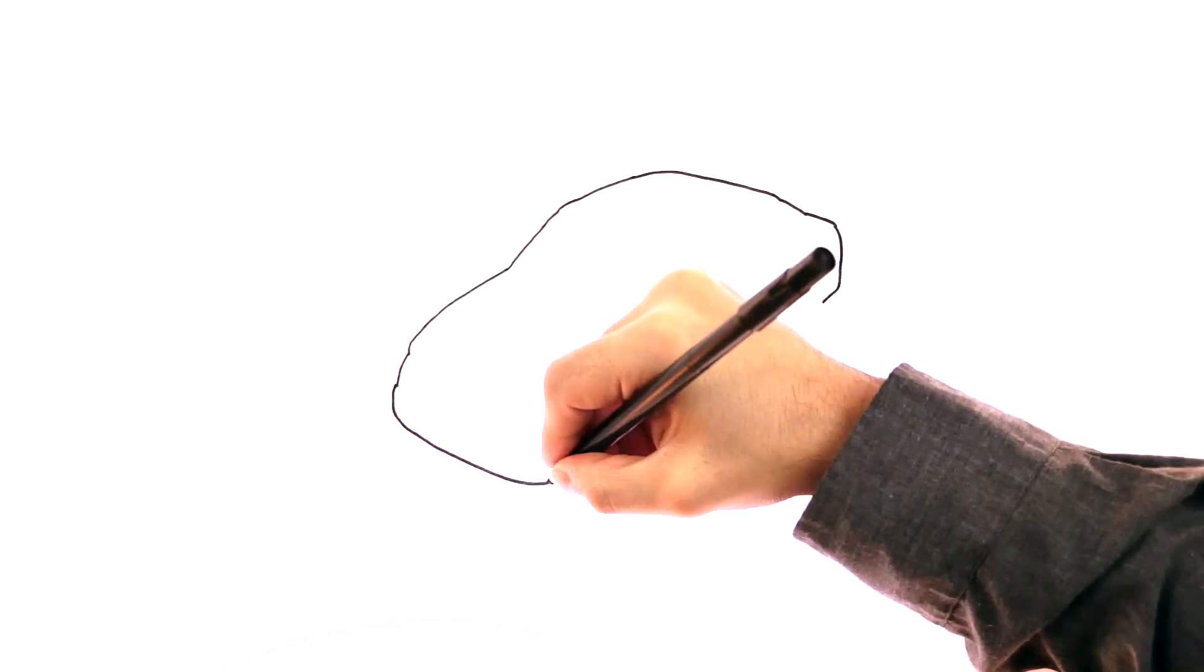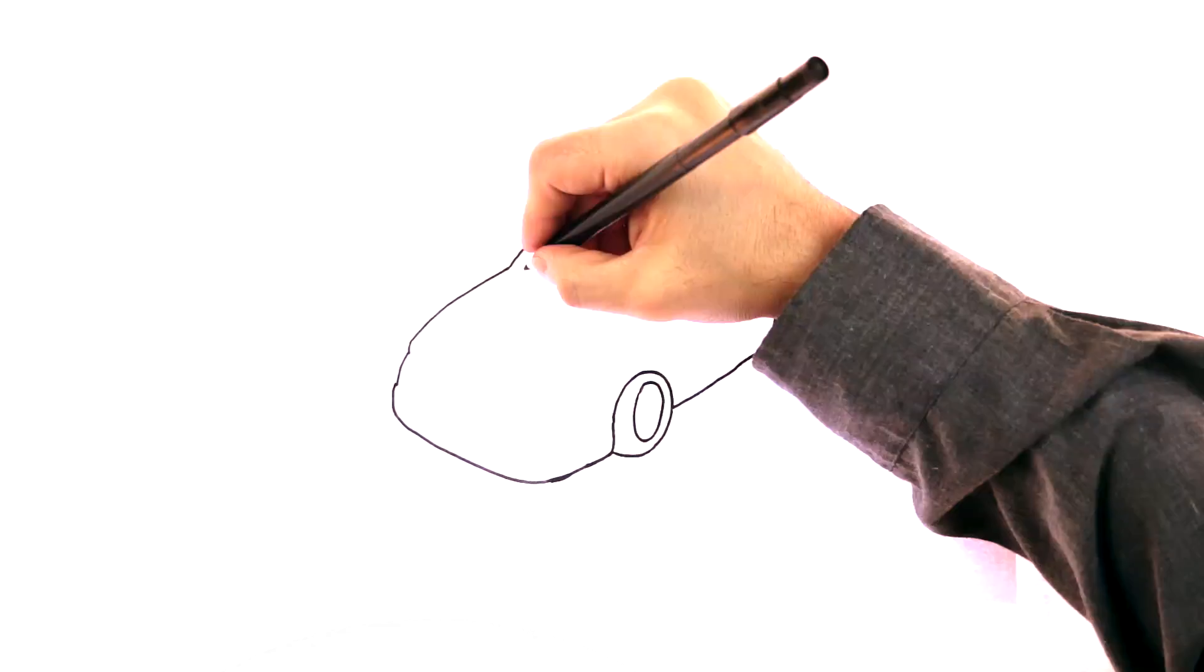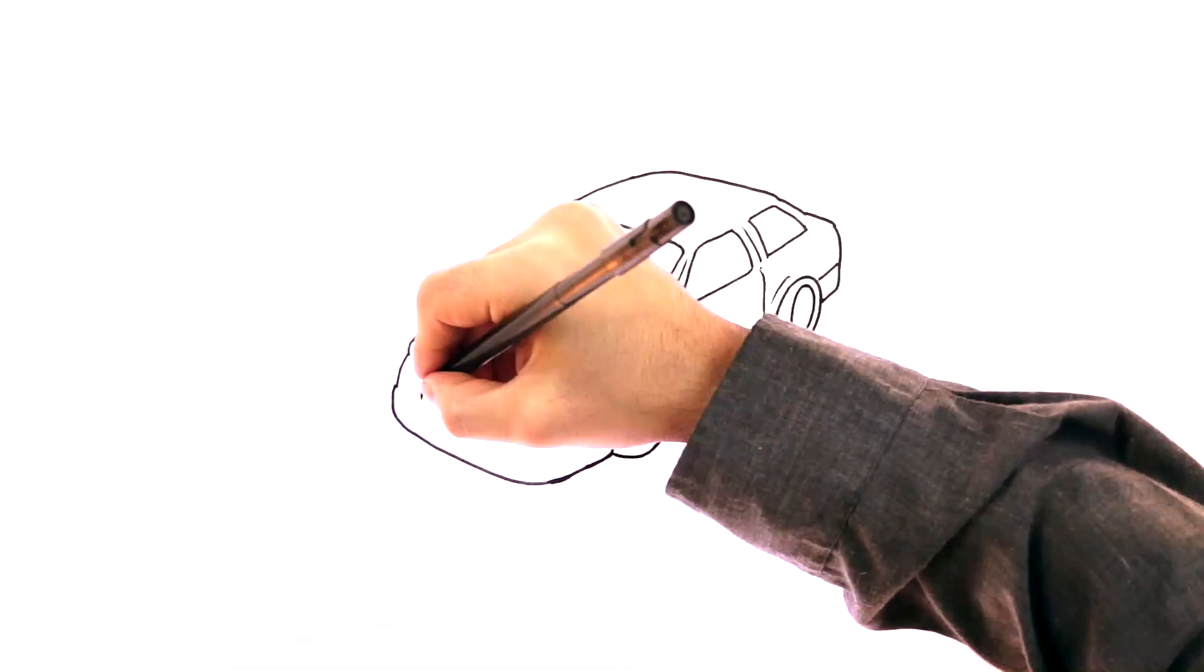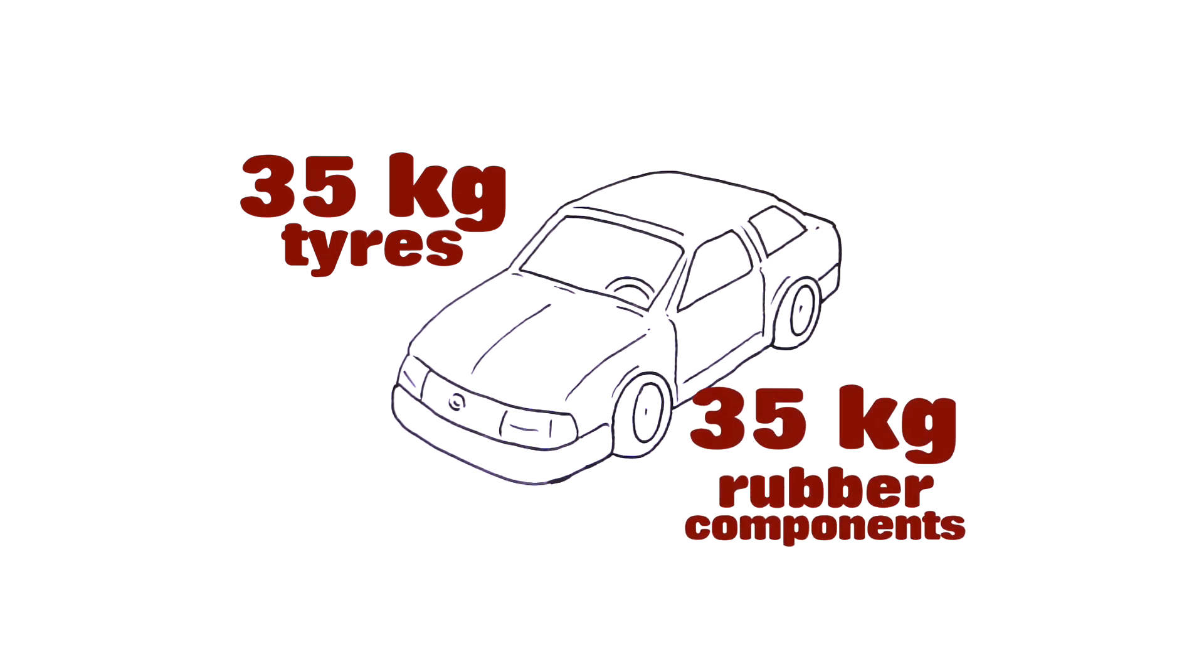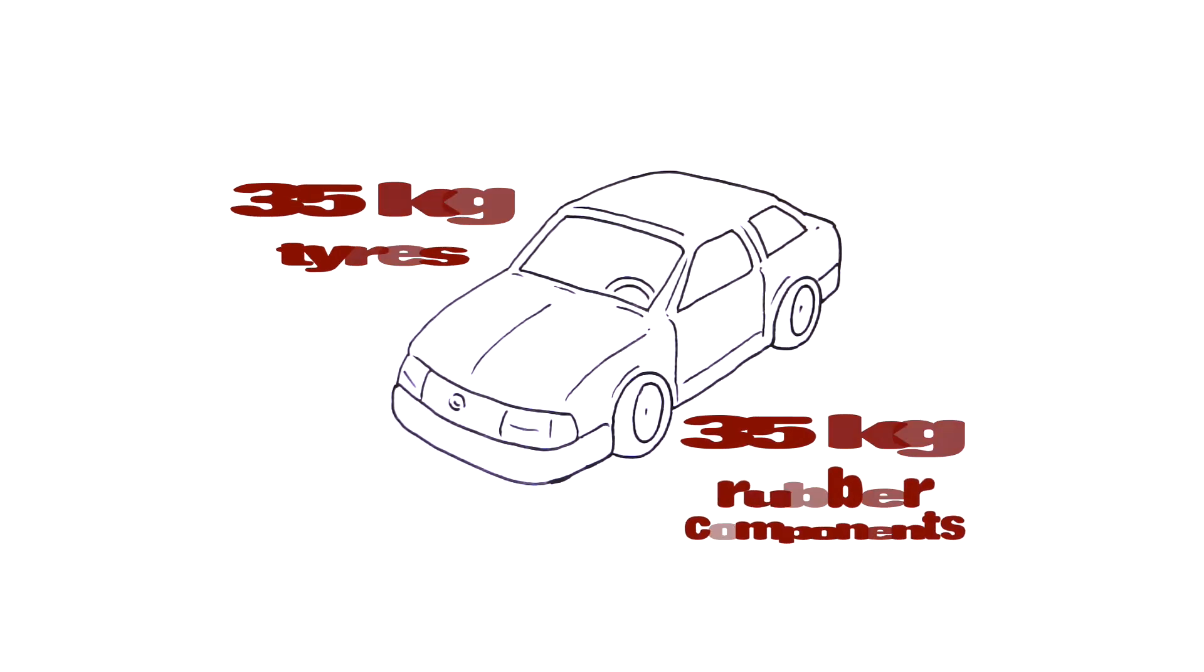But very few people know that in a car, the weight of the other rubber components is the same as the weight of the four tyres altogether. About 35 kilograms of tyres and about 35 kilograms of other rubber components.